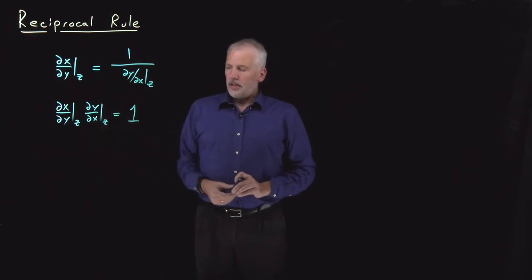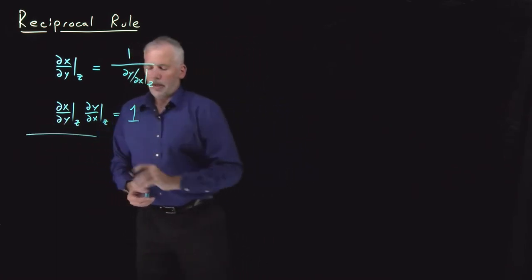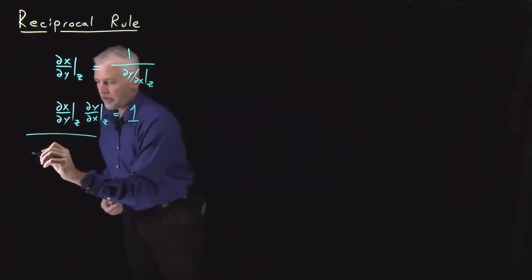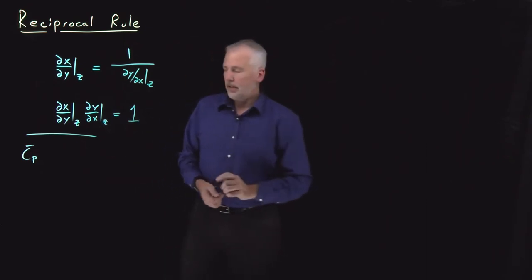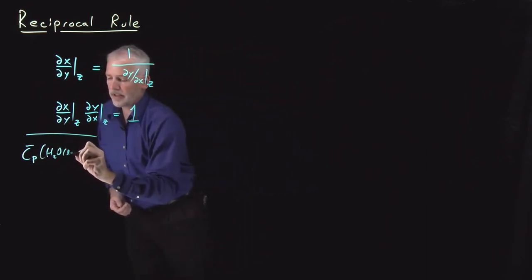That's a fairly elementary, straightforward partial derivative identity. The question is how to use it. Maybe it'll be more clear if we use a concrete example with some actual numbers. You're familiar with the heat capacity of a substance like water, liquid water.